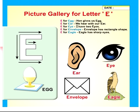E for eye. I have two eyes. E for envelope. Envelope has a rectangle shape.